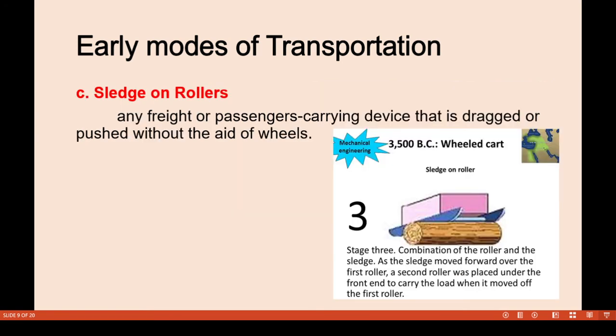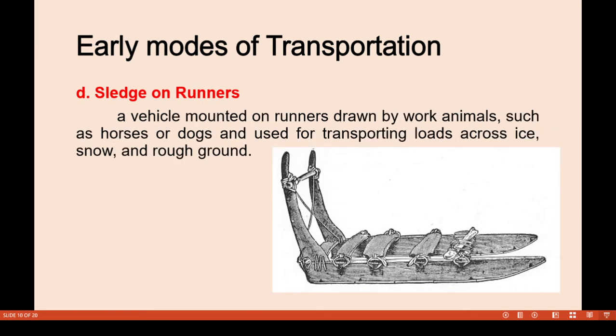The sledge on rollers is a freight or passenger-carrying device dragged or pushed without the aid of wheels. In 3500 BC, a wheel-chart or sledge-on-roller combination was developed: as the sledge moved forward over the first roller, a second roller was placed under the front end to carry the load. A sledge on runners is a vehicle mounted on runners, drawn by work animals such as horses or dogs, used for transporting loads across ice, snow, and rough ground.